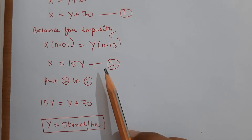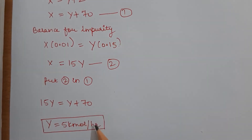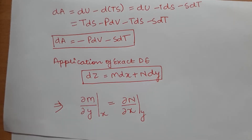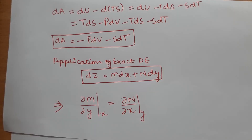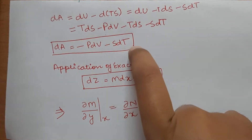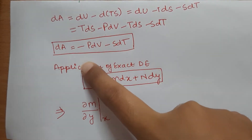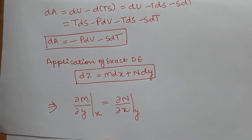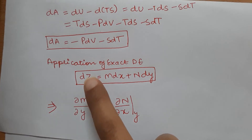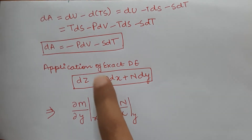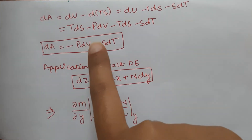Question 2.4: the Maxwell relation derived from the differential expression for the Helmholtz free energy. The fundamental property relation for Helmholtz free energy is dA = −PdV − SdT. Using the exact differential equation dz = Mdx + Ndy, we compare the two equations: M = −P, N = −S.